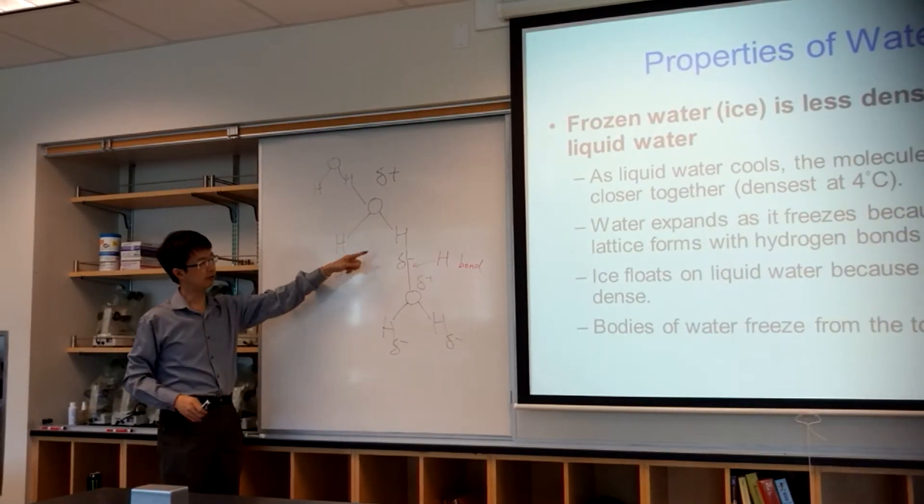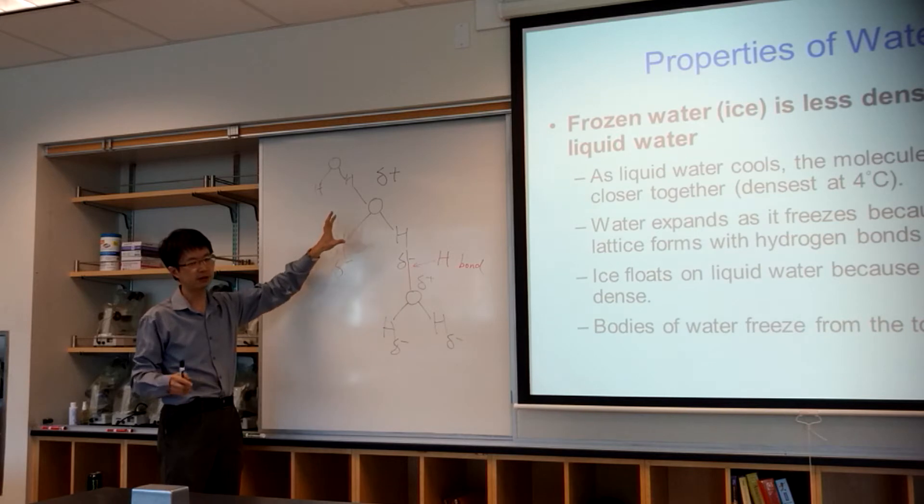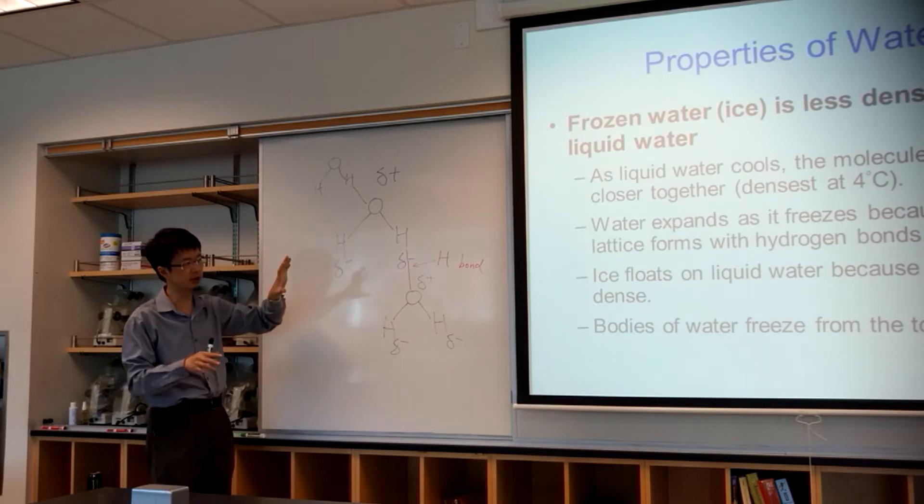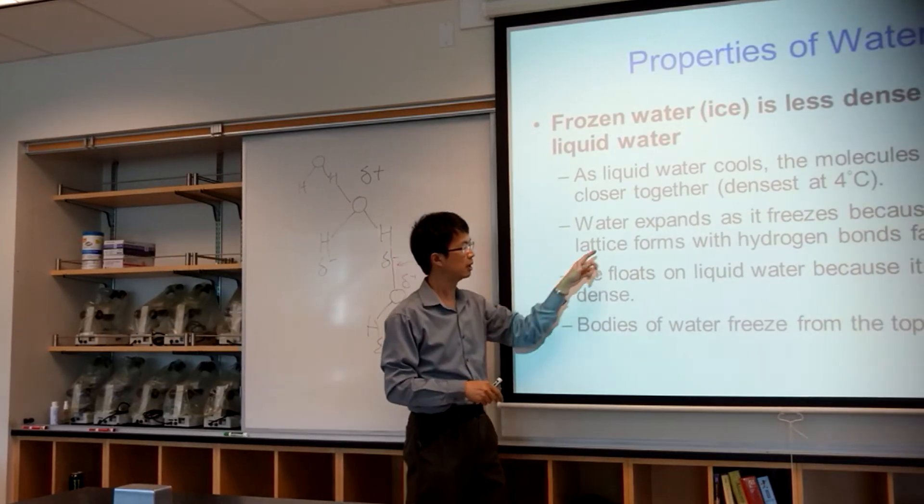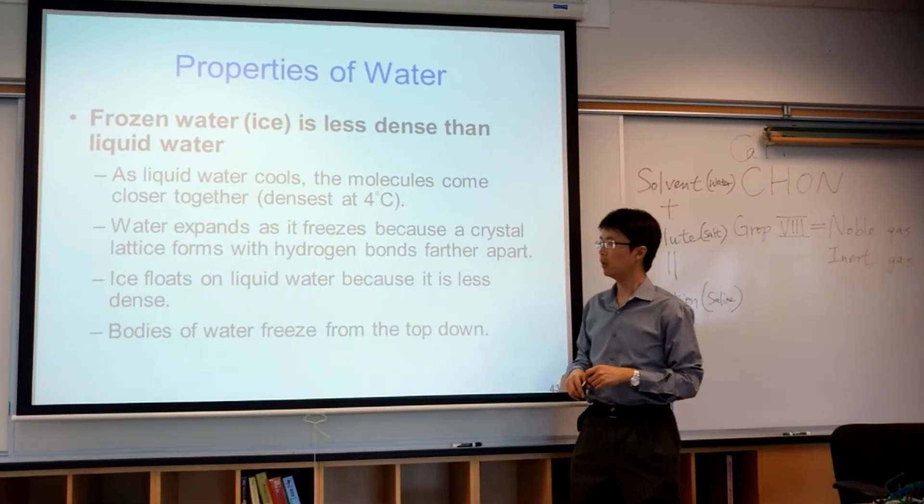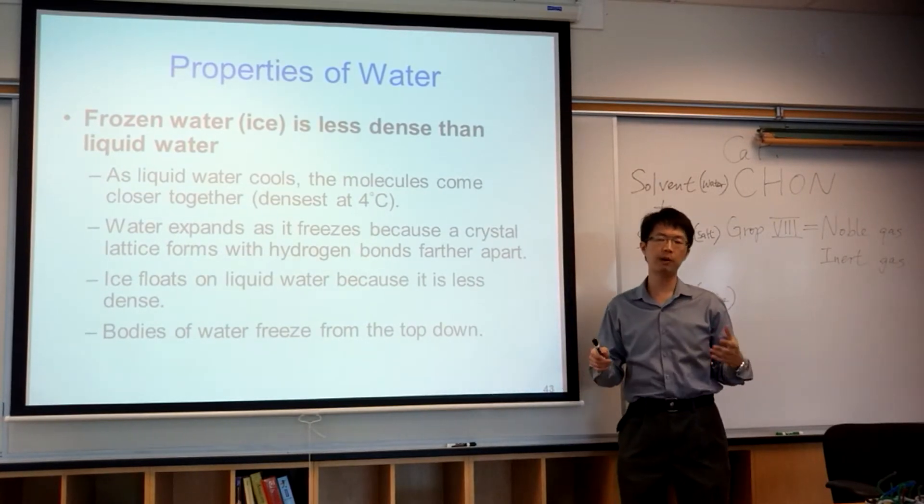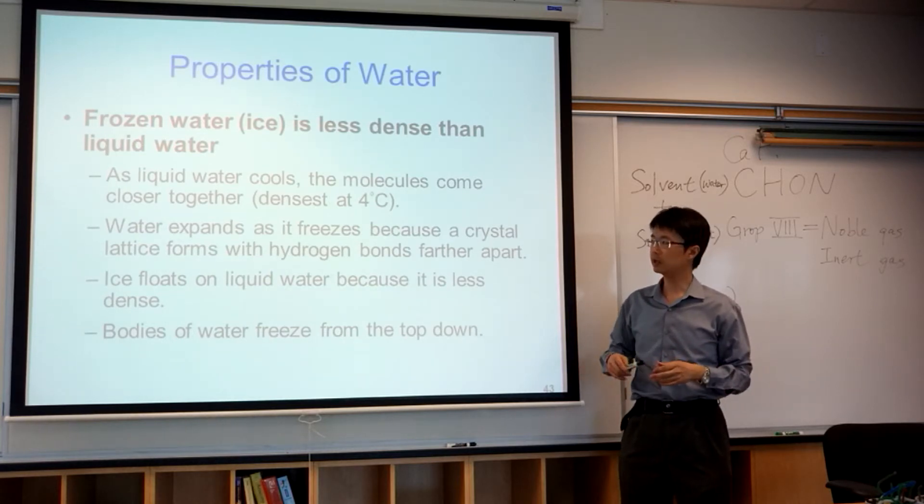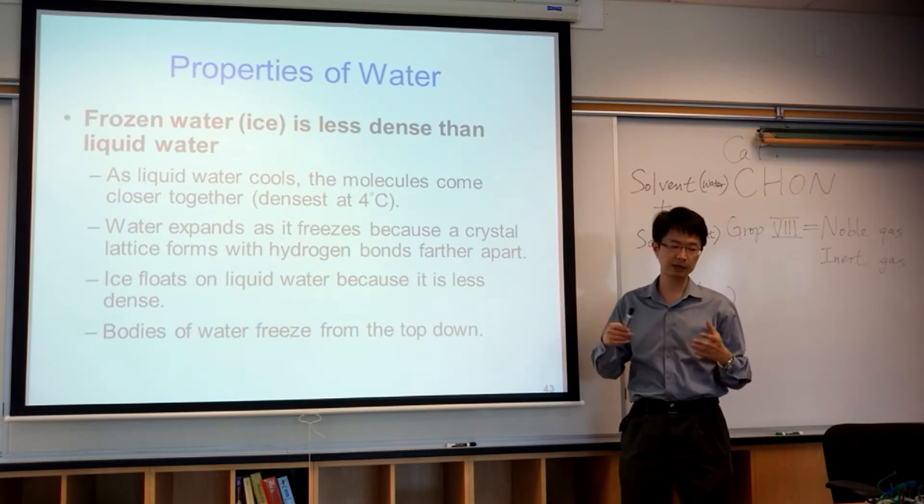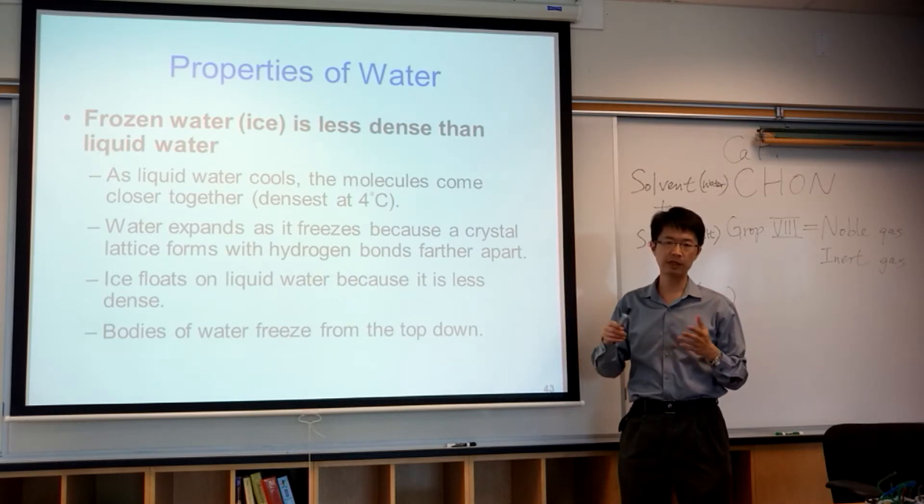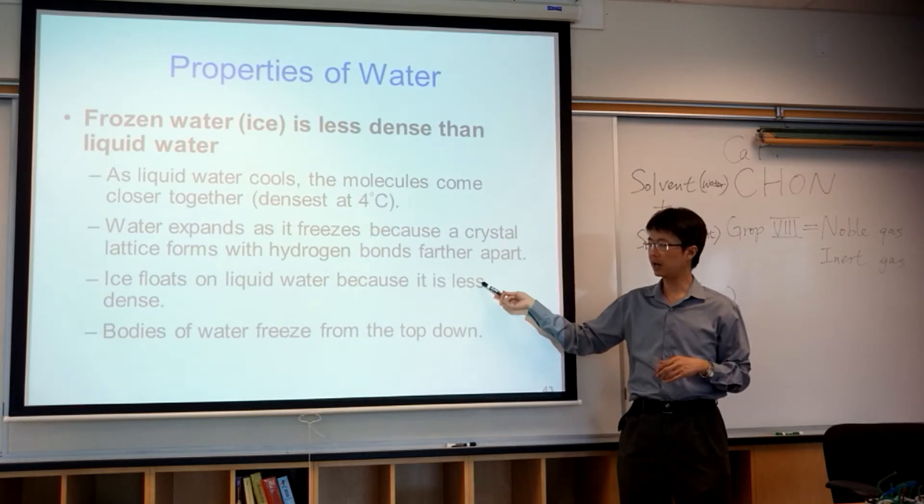The hydrogen bonds that form here will maximize the separation of the water molecules. That's why water will expand after it freezes. When water expands after it forms ice, it makes the density of the ice less than the liquid water, meaning there are more empty spaces between water molecules in ice and less empty spaces in liquid water. That explains why ice floats on liquid water - because it is less dense.